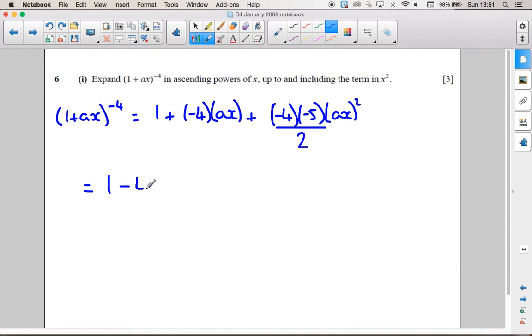So this, if we tidy it up, is 1 minus 4ax. 2 from there is going to cancel with that 2. And this is going to be positive because we've got two negative signs. So it's going to be plus 10 a squared x squared.